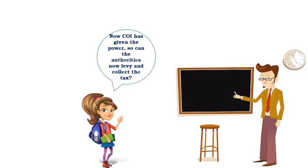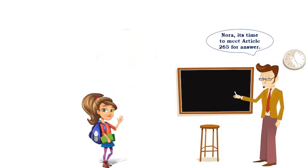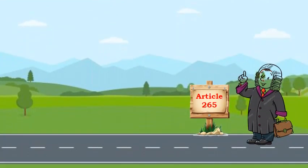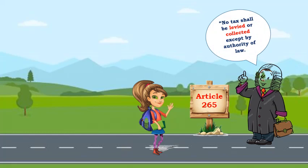The Constitution of India has given the power, and the authorities now levy and collect the tax. It's time to meet Article 265. As per Article 265 of the Constitution of India, no tax shall be levied or collected except by authority of law. The 7th Schedule only gives power to make law, but if the government wants to levy and collect it, it must make a law. Like entry number 82 gives power to Parliament to make law on income tax. Utilizing that power, Parliament made the Income Tax Act, and through this Act, the government got the power to levy and collect tax.